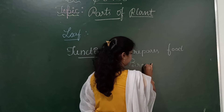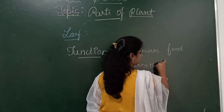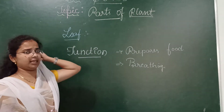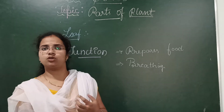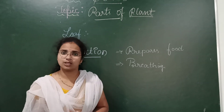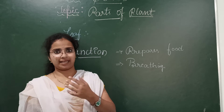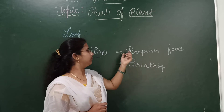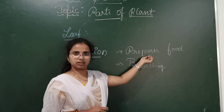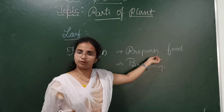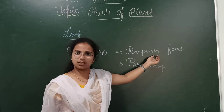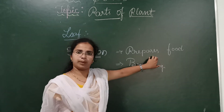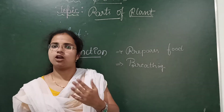Leaf helps plants for breathing. While the process of photosynthesis is going to take place — my dears, what is photosynthesis you will learn in our next class in grade 4. But just keep in mind that the process of preparing food is known as photosynthesis. While plants are preparing food, there will be an exchange of gases.